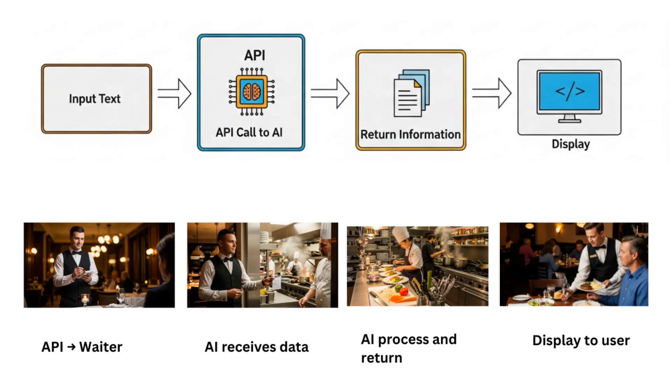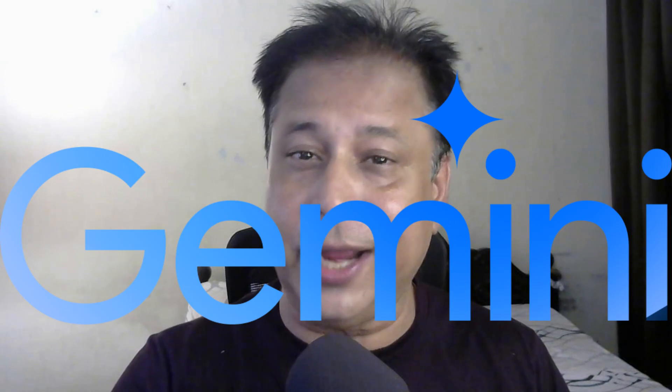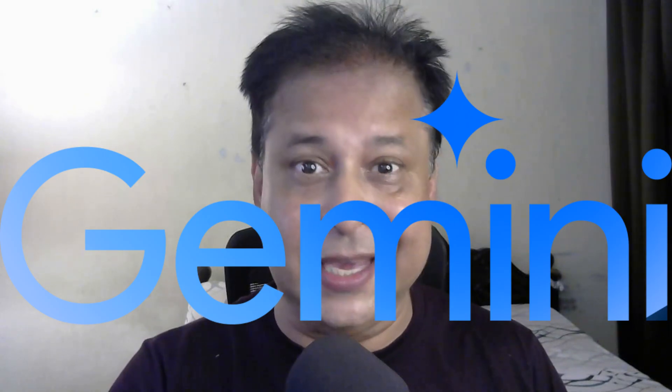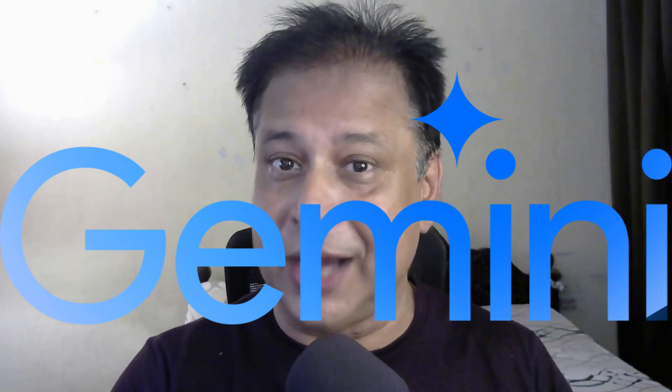But one question came up: how to get an API key? To continue, we will first learn how to get a Gemini API key and use it in our system.